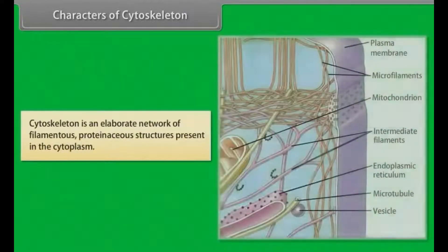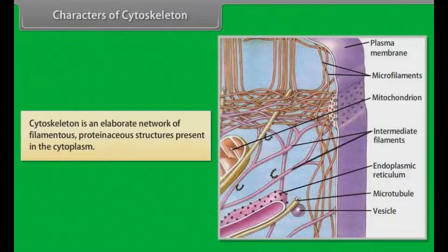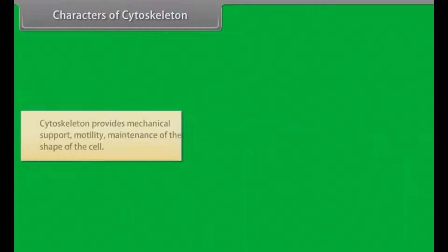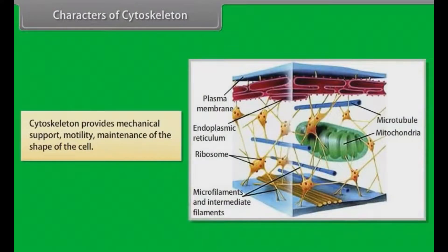Characters of cytoskeleton: Cytoskeleton is an elaborate network of filamentous, proteinaceous structures present in the cytoplasm. Cytoskeleton provides mechanical support, motility, and maintenance of the shape of the cell.